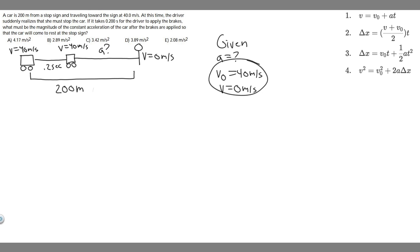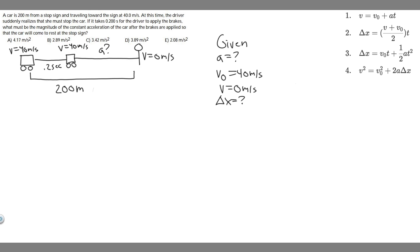Notice we only have two variables, and we need three in order to solve a kinematic equation. The other variable we could find is delta x or time. We're not really given the time, so that's not possible to find directly. But what we can do is find delta x. So if we can find what delta x is — how long this braking interval is — we can solve for a because we'll have the initial velocity, the final velocity, and delta x.